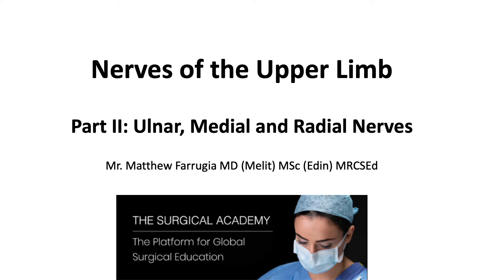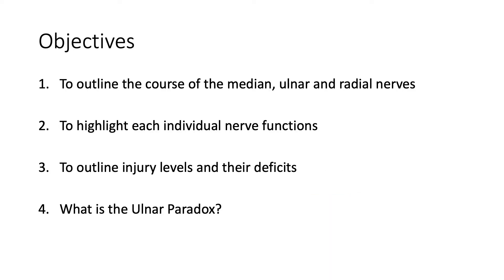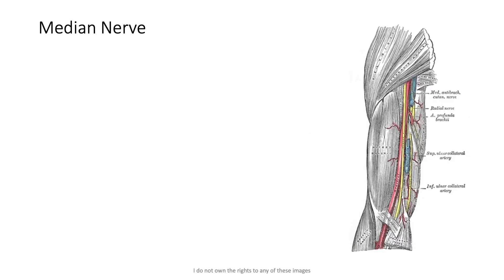Welcome to the second part of the teaching on nerves of the upper limb, titled ulnar, medial and radial nerves. The objectives for this teaching are to outline the course of the median, ulnar and radial nerves, to highlight each individual nerve's functions, to outline injury levels and their deficits, and to understand what the ulnar nerve paradox is. We will begin with the median nerve, using the same structured approach as the previous teaching.